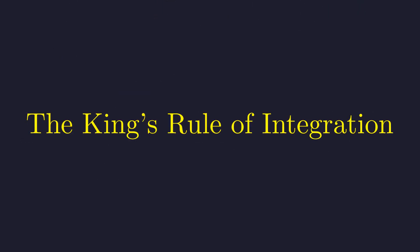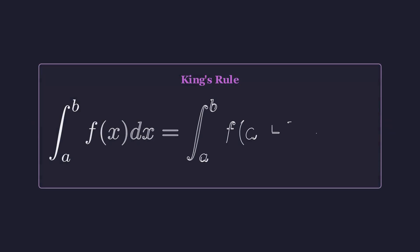The key to this puzzle is a powerful property of definite integrals, sometimes called the king's rule. This rule states that the value of a definite integral is unchanged if we replace the variable x with the sum of the limits of integration minus x. Let's apply this to our integral.